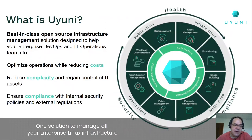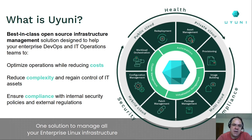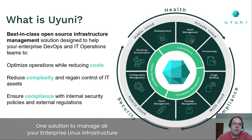This is exactly where Uyuni can help. Uyuni is the best-in-class open source infrastructure management solution designed to help you in your enterprise DevOps and IT operations. It will help you reduce costs, reduce complexity, and regain control of your IT assets. It will also help you ensure compliance with your internal security policies and even external regulations. It's one solution to manage all your enterprise Linux infrastructure — private cloud, public cloud, hybrid cloud — covering provisioning, patch management, building OS images, containers, virtualization, and configuration management. It covers, I typically say, about 80% of your day-to-day.